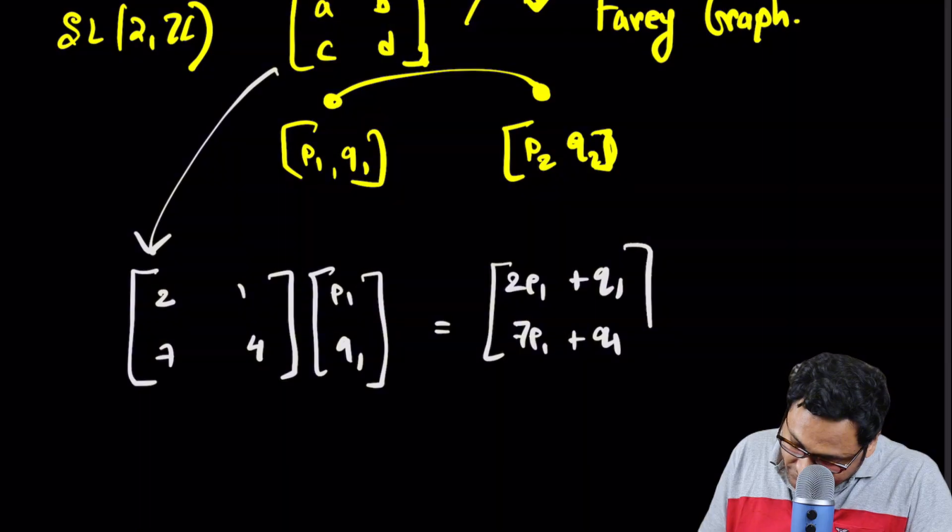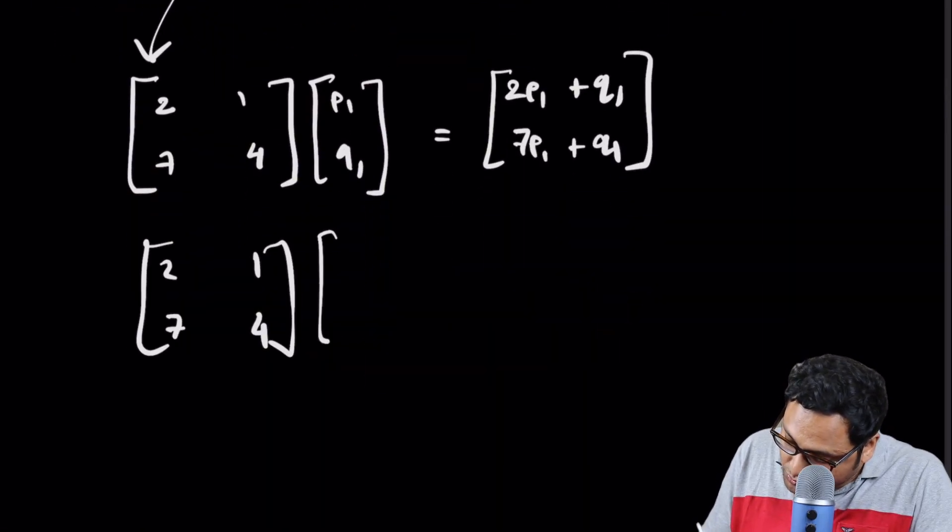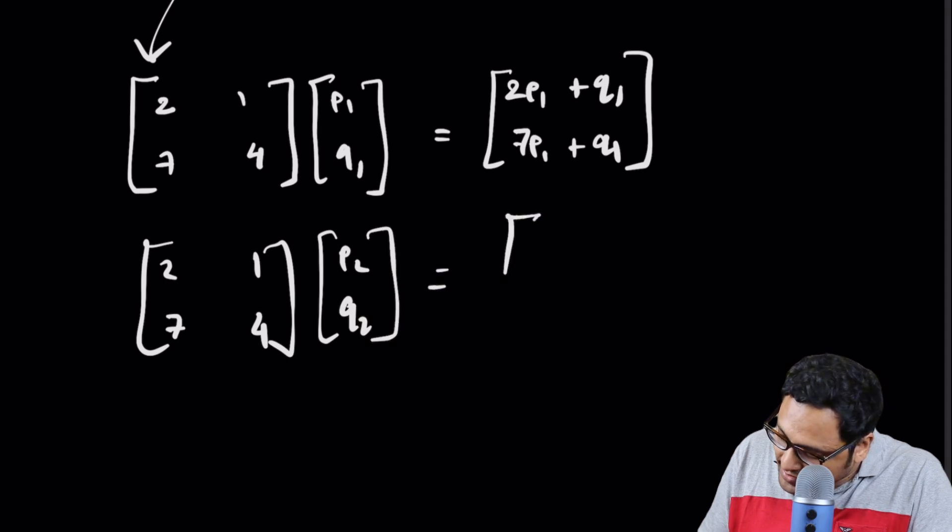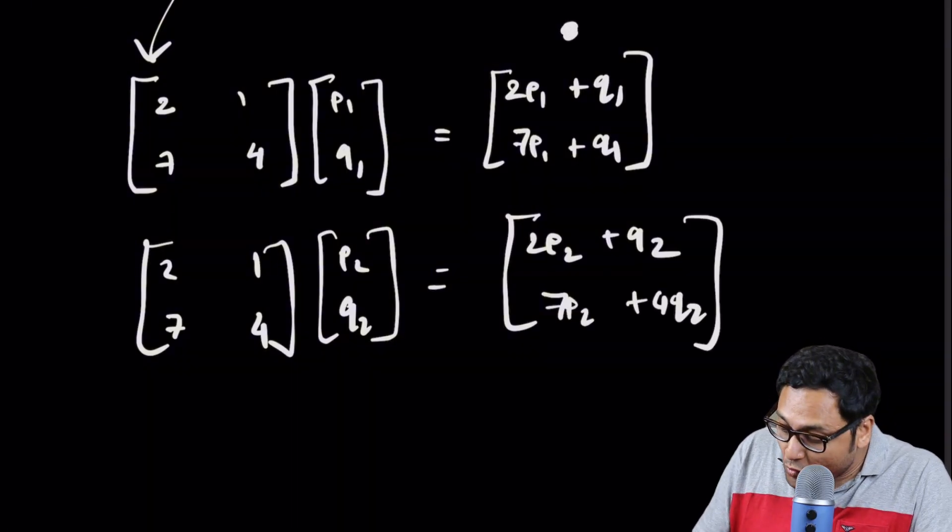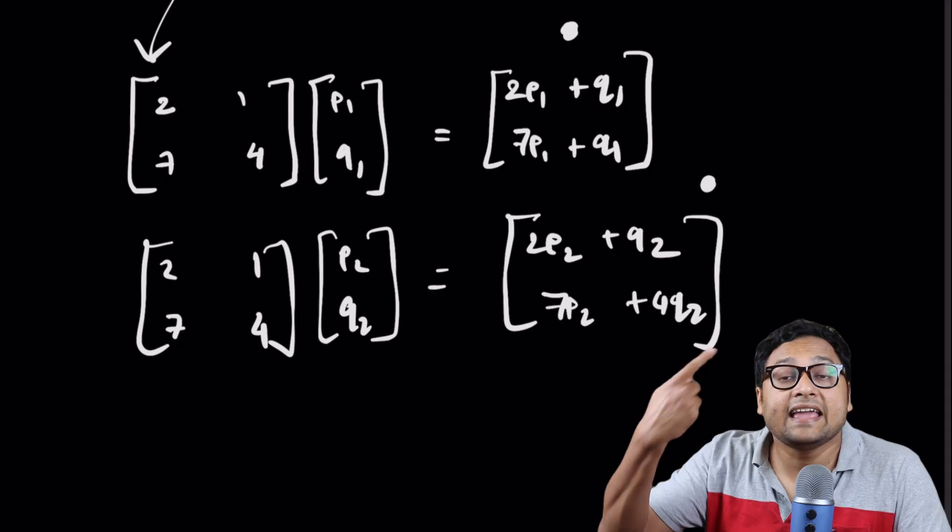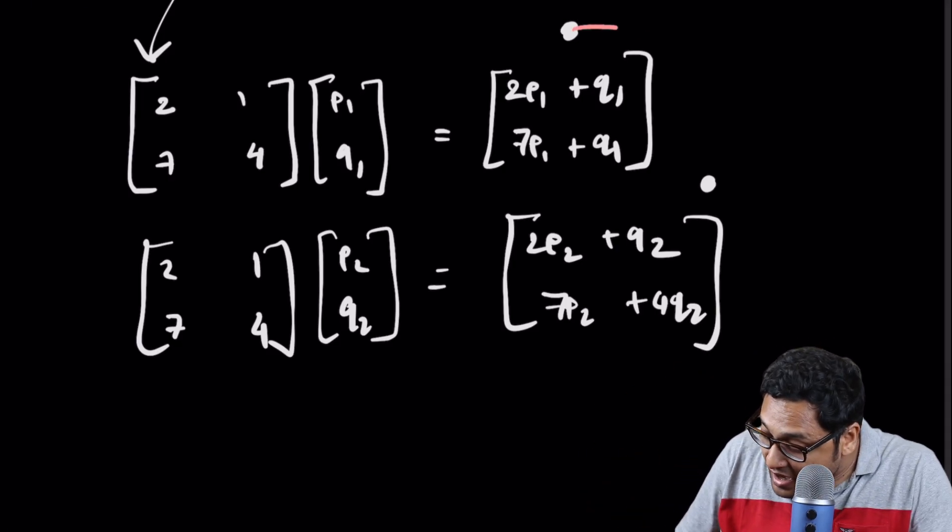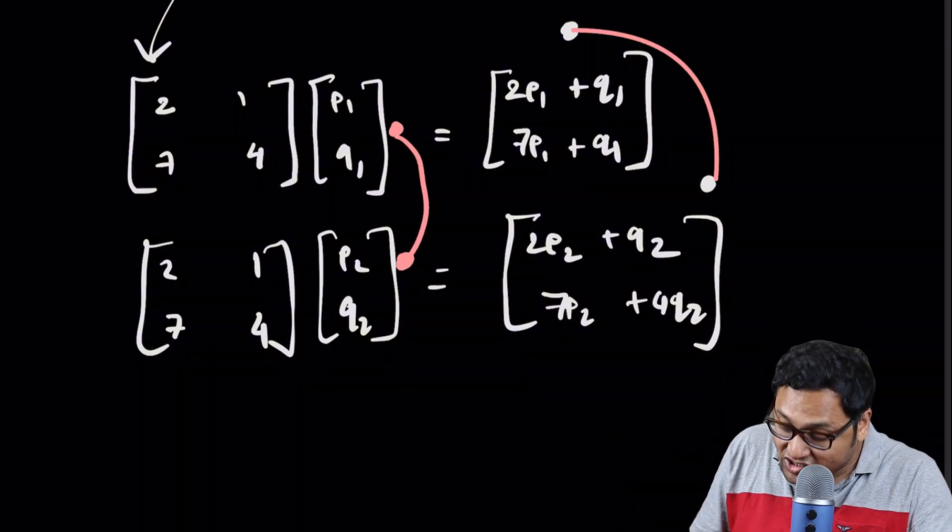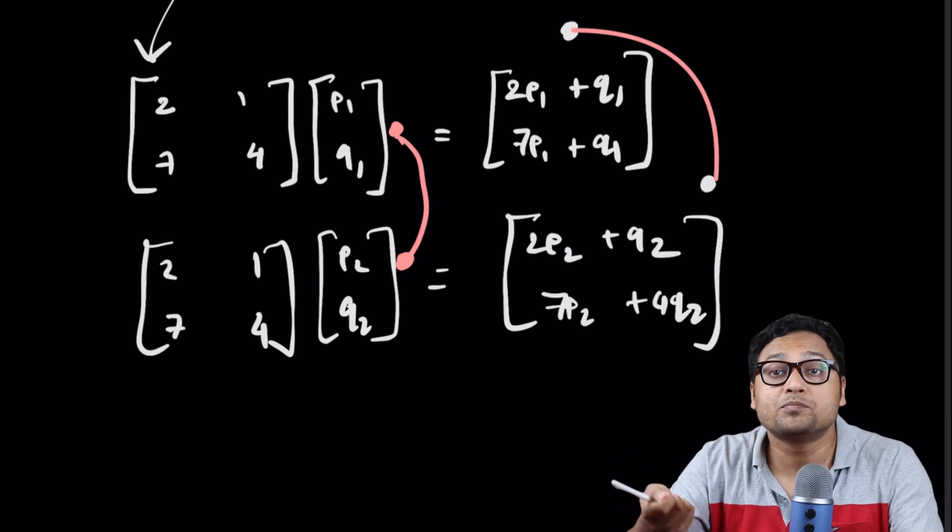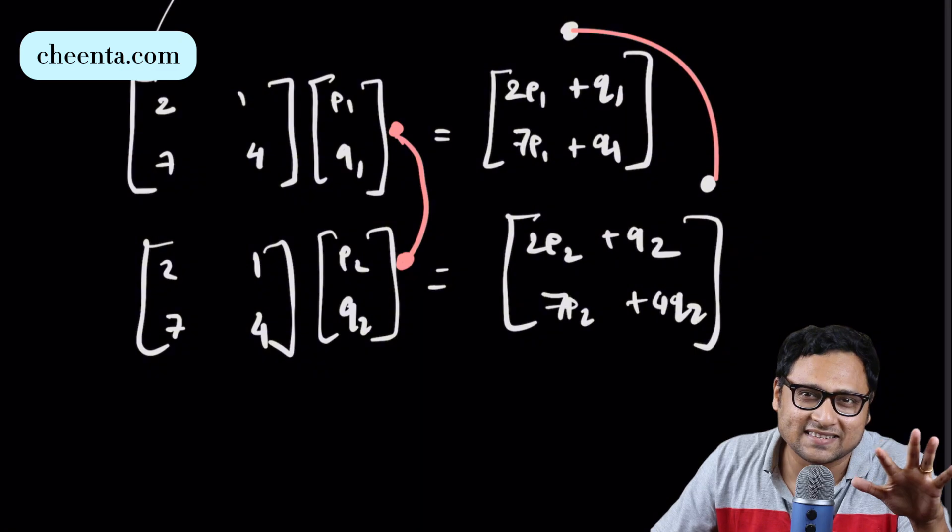Similarly, if I apply that matrix on P2, Q2, then I will get another point, 2P2 plus Q2, 7P2 plus 4Q2. So these two points will again be members of the Farey graph and there will be an edge connecting those two points. If the initial points were connected by edges, the output points will also be connected by edges in the Farey graph. Actually, it's quite simple to prove it.